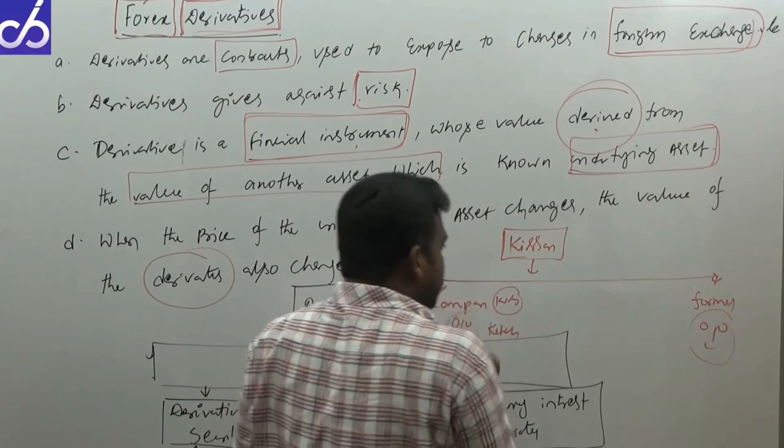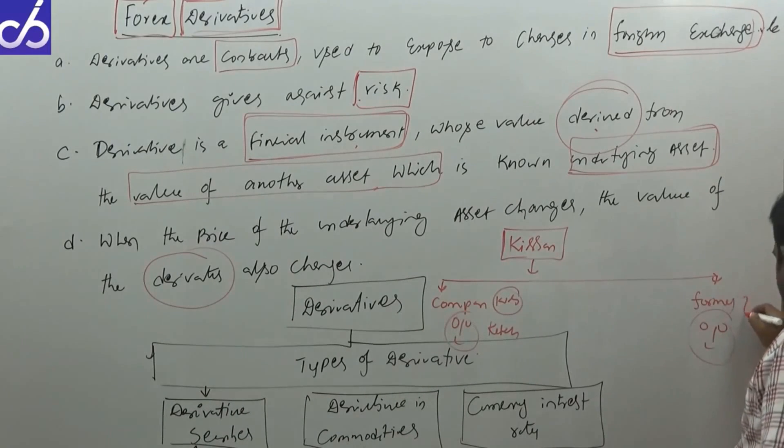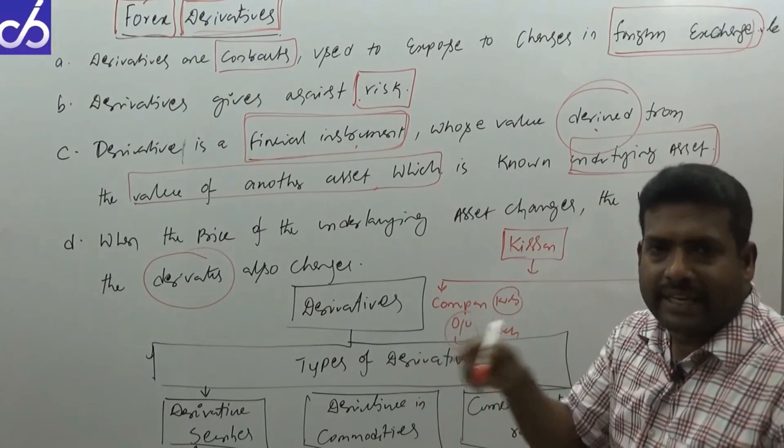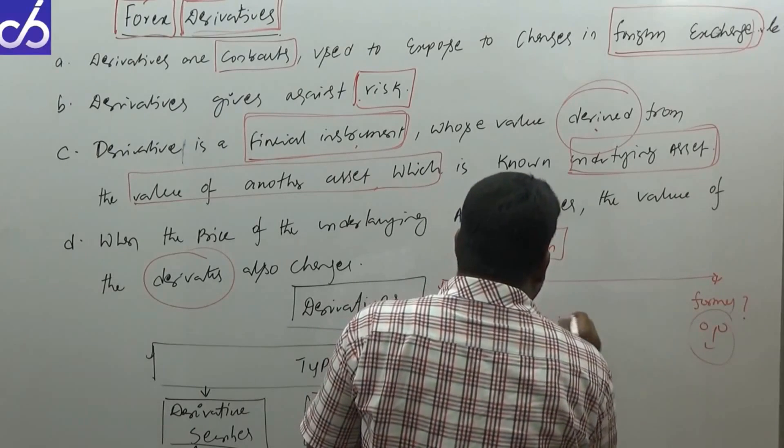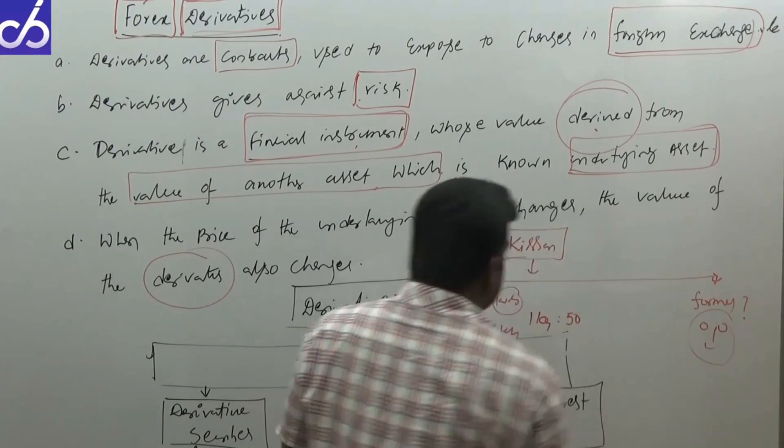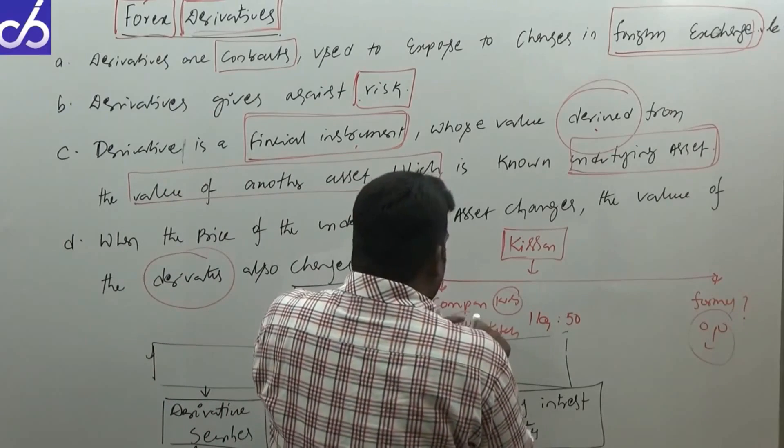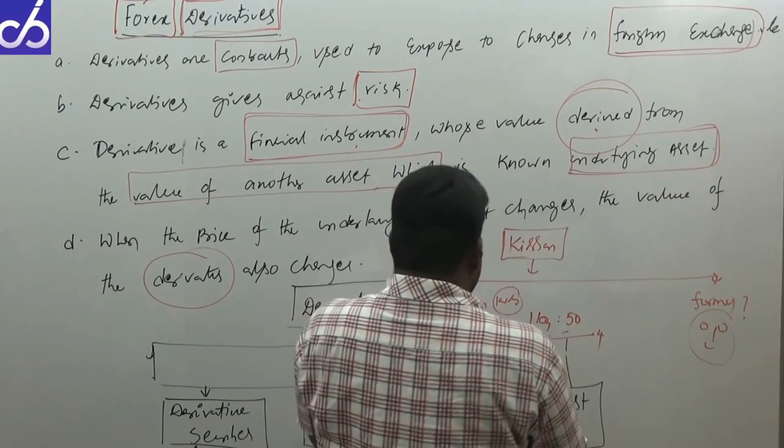The farmer and company director are both thinking differently. At present, one kg of tomatoes is approximately 50 rupees. After four months, they're thinking the tomato price may go to 80 rupees.